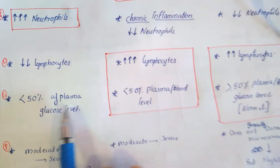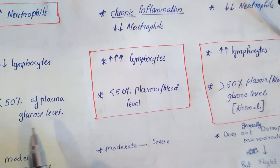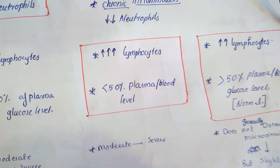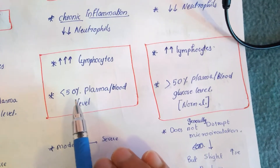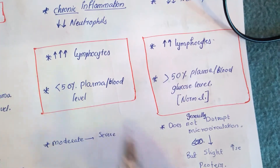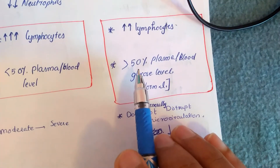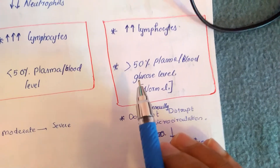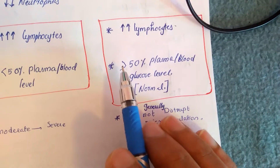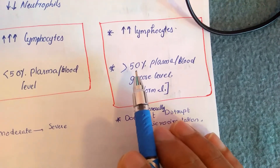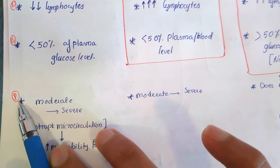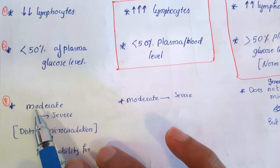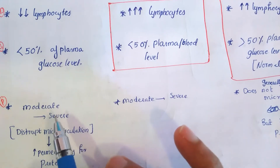Next, the level of glucose: in pyogenic meningitis it is less than 50% of plasma glucose level, because bacteria utilize glucose for energy production. In tuberculosis meningitis, glucose is also less than 50% of plasma or blood level. However, viruses do not use glucose for energy production, so in viral meningitis the level of glucose is greater than 50% of plasma or blood glucose level, or it may be normal.